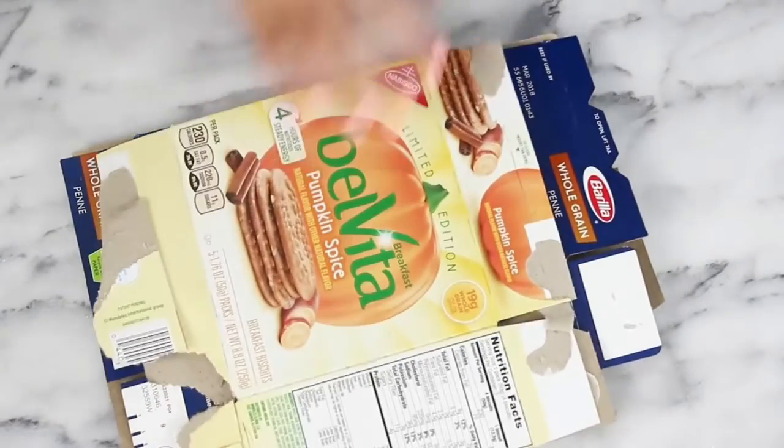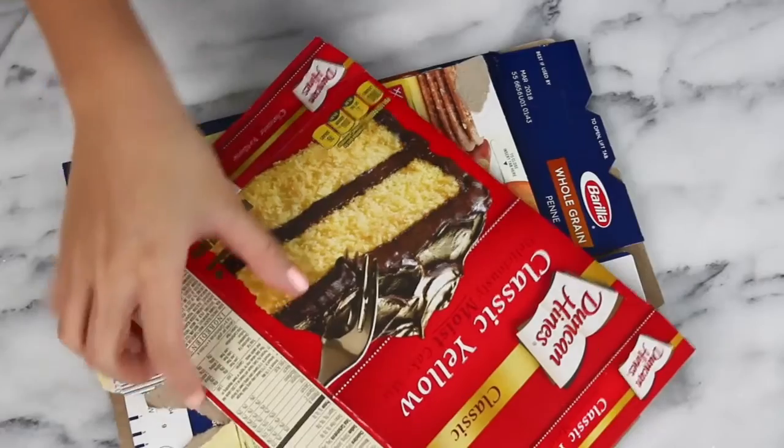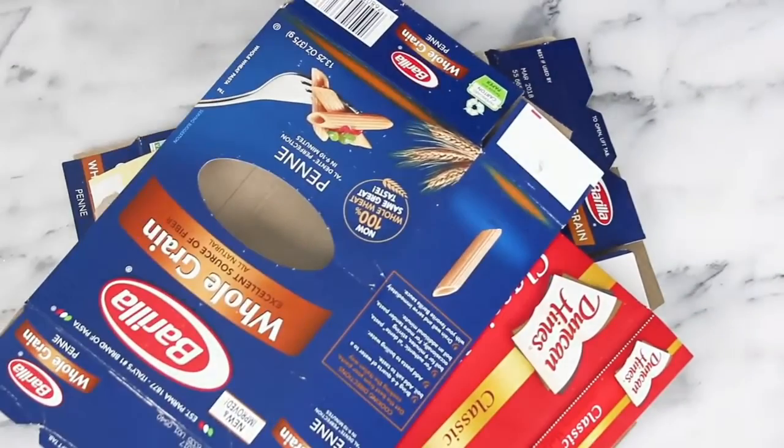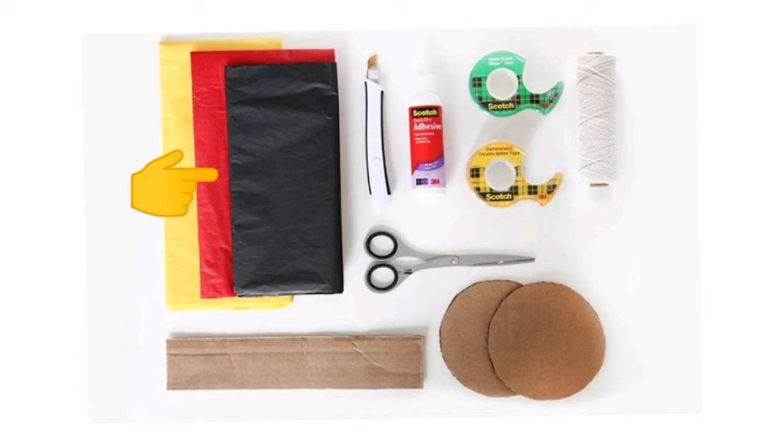To make the piñata you need cardboard. You can use any cardboard you have in your house, it can be from snacks or cereal. And then you also need tissue paper, scissors, glue, tape, string, and then you also need a pencil or a pen to draw the shape of the piñata.